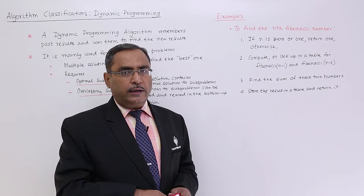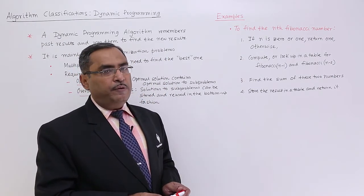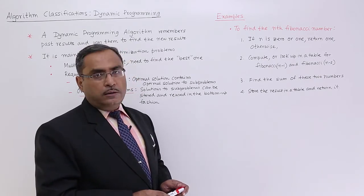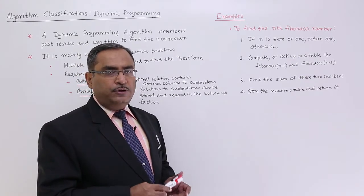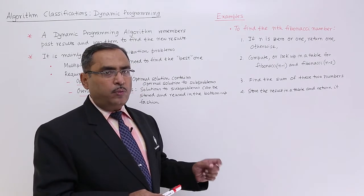Here we are trying to calculate Fibonacci numbers. To find the nth Fibonacci number of the Fibonacci series, if n is 0 or 1, return 1. That means we know that at the 0th place or at the first place, we will have the Fibonacci number as 1.